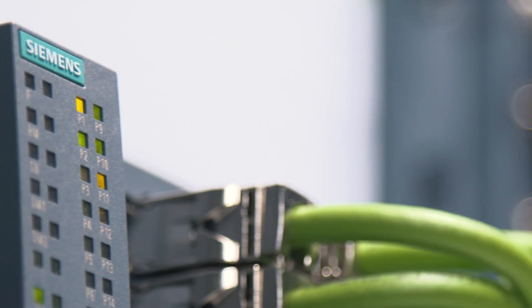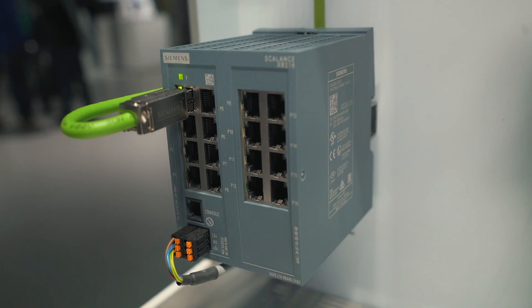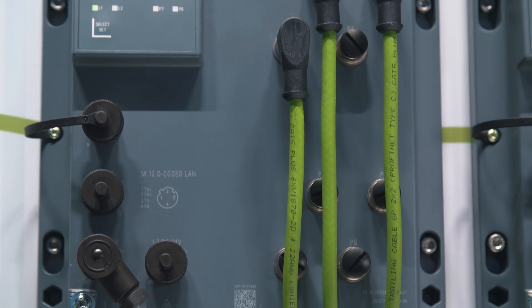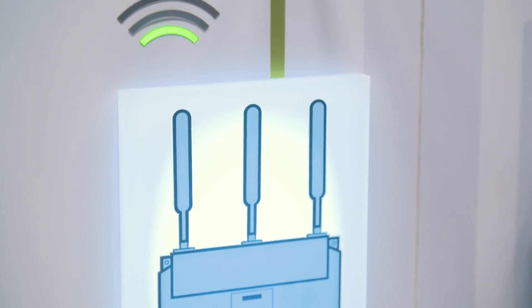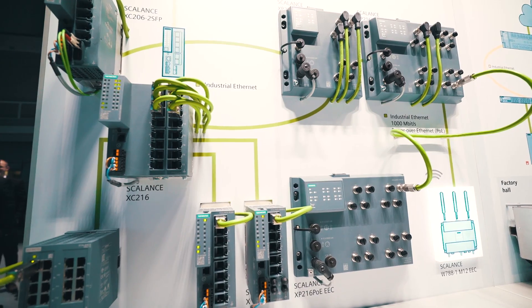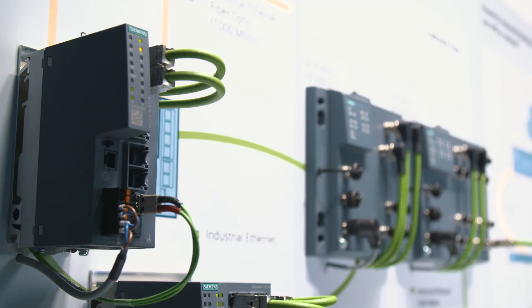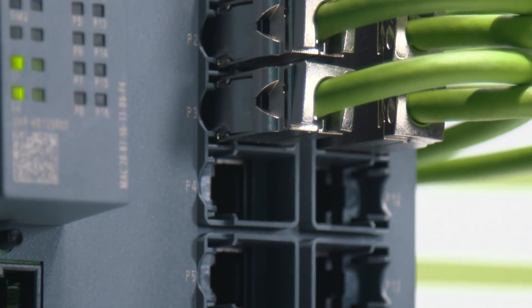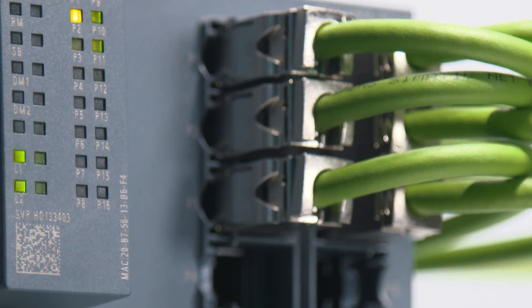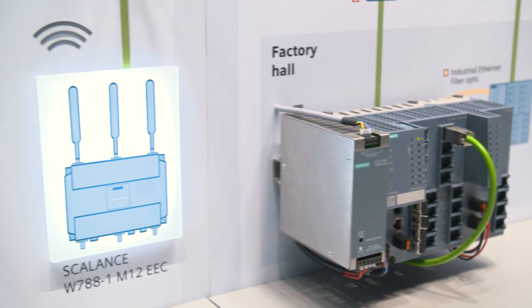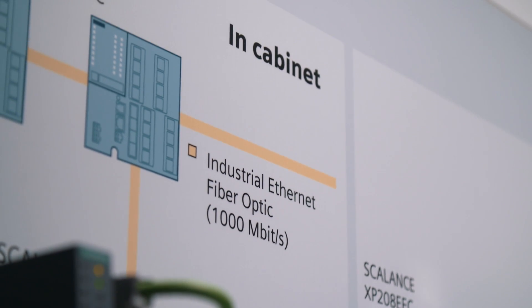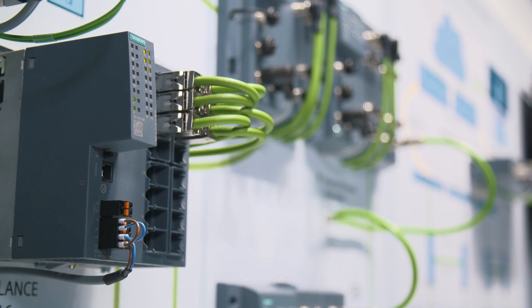Industrial networks are the basis of digital production. That's why more and more companies invest in modern communication structures. In addition to high data rates, interoperability with global standards and flexible use plays an important role, particularly the increasing connectivity of machines and plants.